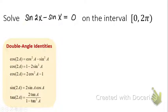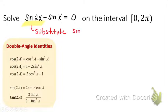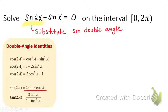Notice that we have sine of 2x. When you're multiplying x by 2, that is a double angle identity. So what we need to do is a substitution — we're going to substitute the sine double angle. We know from the purple sheet that sine of 2x is really equal to 2 sine x cosine x.